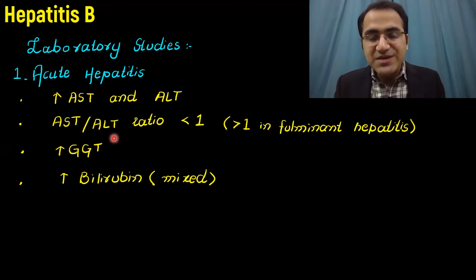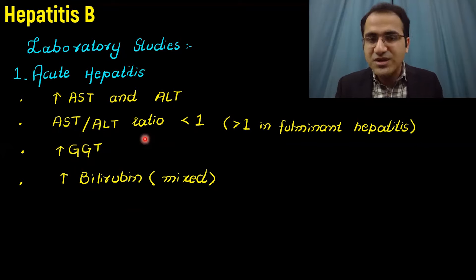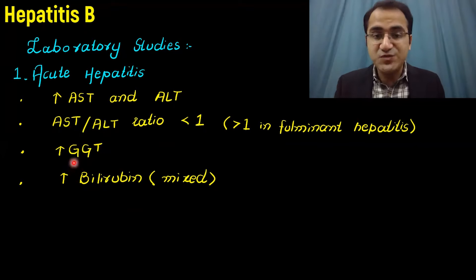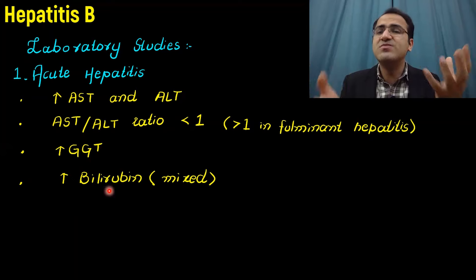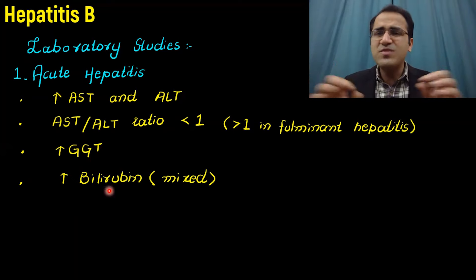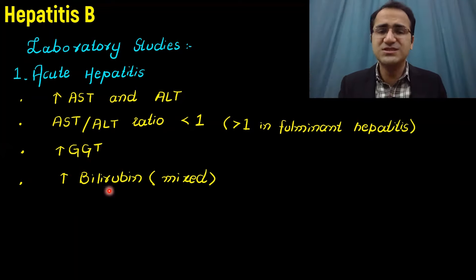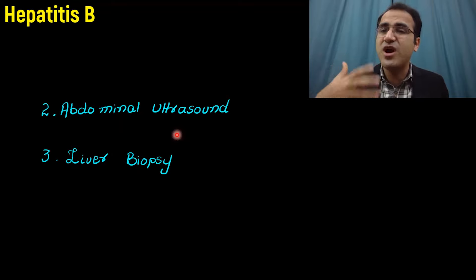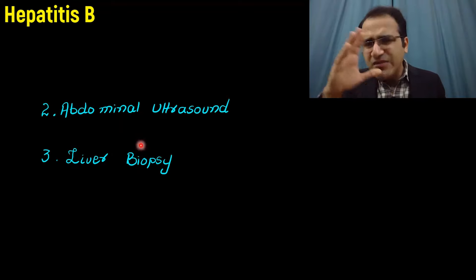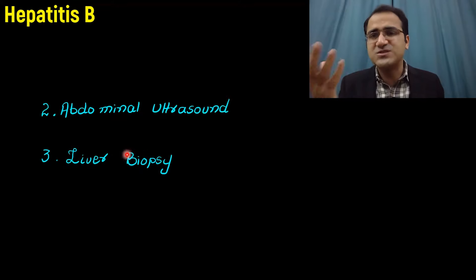In lab studies, a liver function test will show elevated AST and ALT, with ALT elevated more than AST, giving a ratio less than one. Gamma-glutamyl transferase will be elevated and there will be mixed hyperbilirubinemia — both conjugated and unconjugated bilirubin elevated. Abdominal ultrasound can assess liver status, and in rare cases liver biopsy is done for diagnosis or prognosis, particularly if liver cancer is suspected.